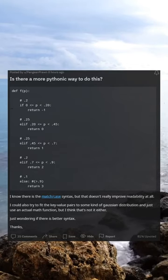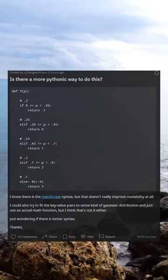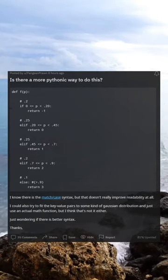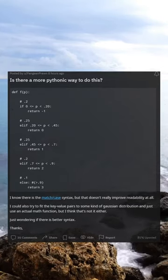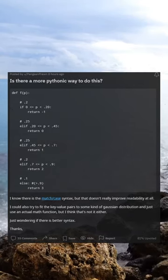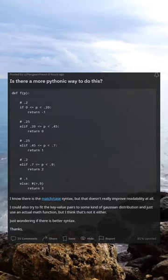Is there a more pythonic way to do this? def fp.2 if 0 p.20 return 1.25 l if 0 p.45 return 0.25 l if 0.45 p.7 return 1.2 al if 0.7 p.9 return 2.1 else 0.9 return 3